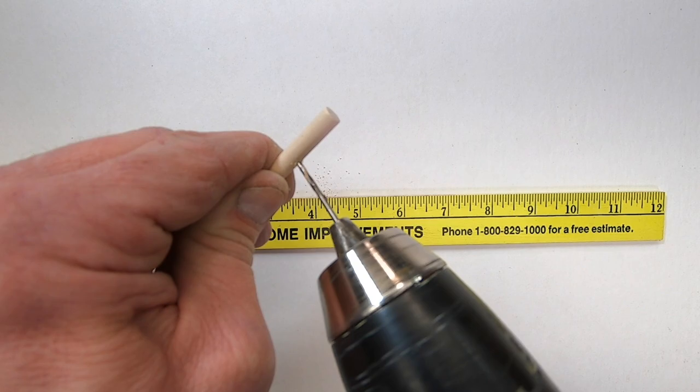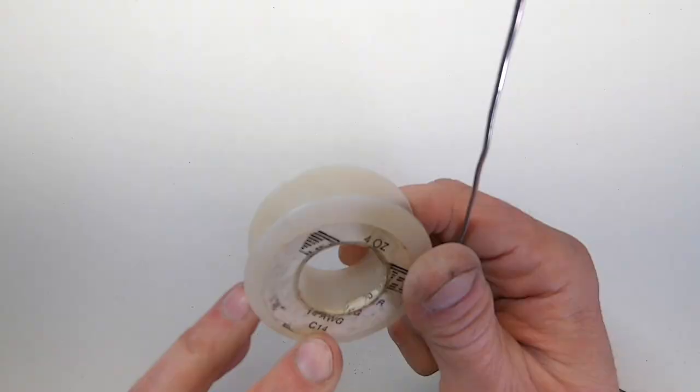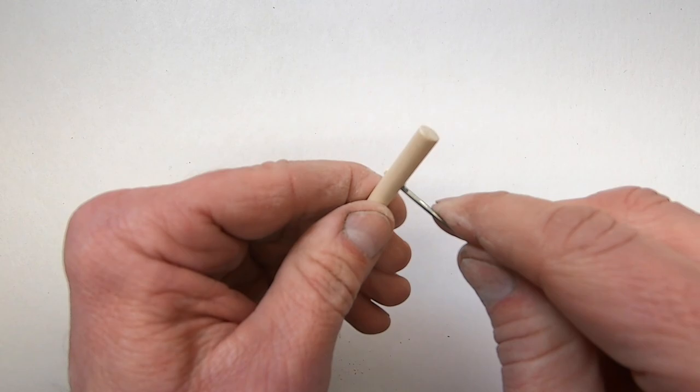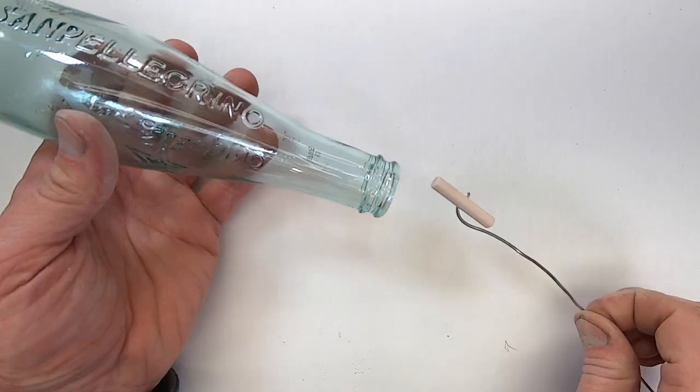Right in the center of the quarter inch dowel I'm drilling a small hole for the size of this 14 gauge stiff wire to slip into. Now pay attention. This is where I really get clever.